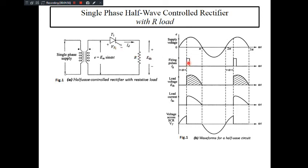Once you apply the firing pulse at phase angle alpha, at that point T1 will suddenly be turned on. Once T1 is turned on, current will start flowing — the diode current will start flowing through the load — and automatically a voltage drop will start appearing across R. The load voltage will start from alpha to π; during that period T1 will be on. The load current will also follow the load voltage. But during alpha to π of the positive half cycle, as T1 is on, there is no voltage drop across T1 — ideally we consider it as zero.